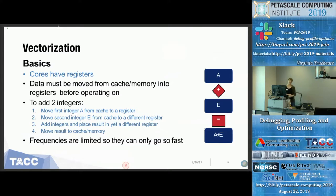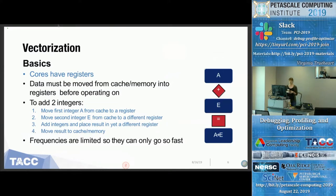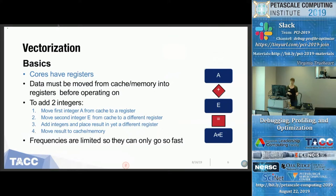Now I'm going to talk about vectorization, because this is the top level of optimizing your code. Vectorization is the process of making use of all those nodes and cores on the node to distribute your tasks evenly across the system. Each core has what we call a register, which has to do with the number of bits and how they are distributed across the core. The important thing to remember is that data has to be moved from the cache or memory into the register before your operations start.